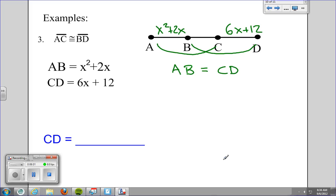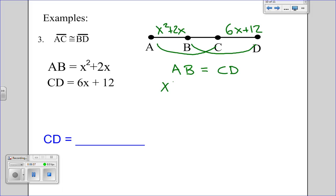We learned that AB is congruent to CD, so we can write AB equals CD. And we already know what AB is, it's x squared plus 2x. And we know what CD is, it's 6x plus 12.